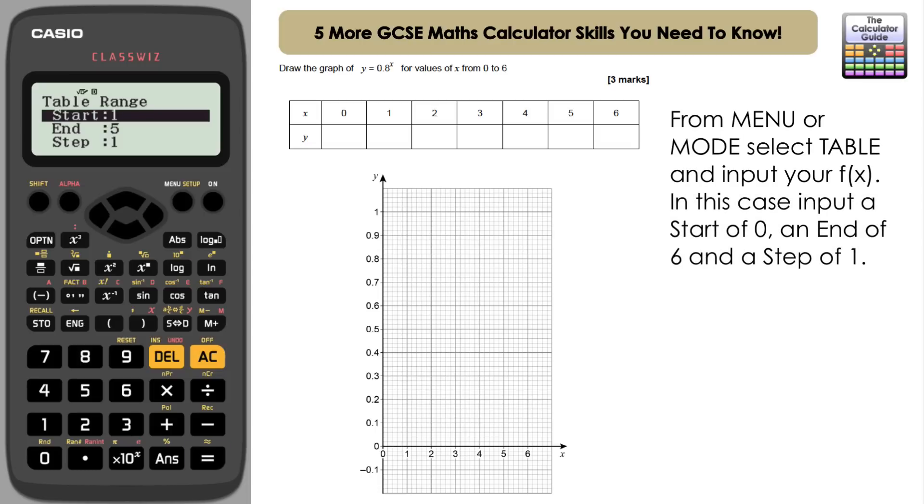We need to input start, end, and step. If you're on an earlier model, these will be just separate. So we're going to start with the lowest value of X, which is 0, and then it will prompt for end. So our end is going to be 6, values from 0 to 6. The step is how much it's going up each time. It's going up 1 each time, so we're going to keep that step as 1. Press equals, and here we have a table of results: 1, 0.8, 0.64, and so on.